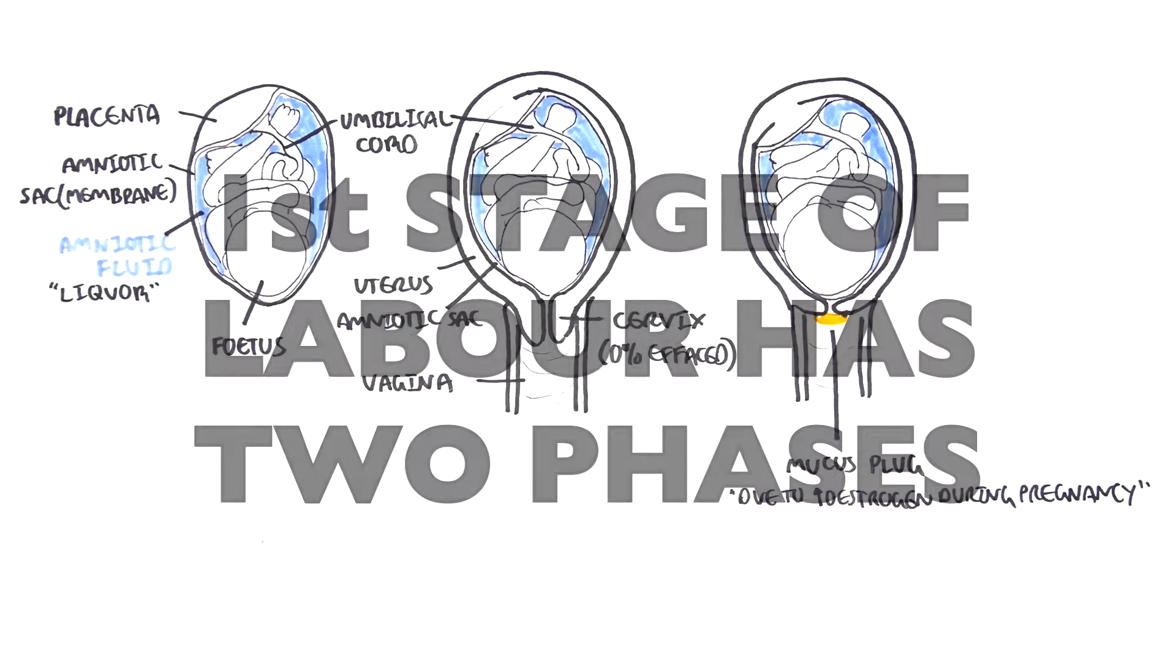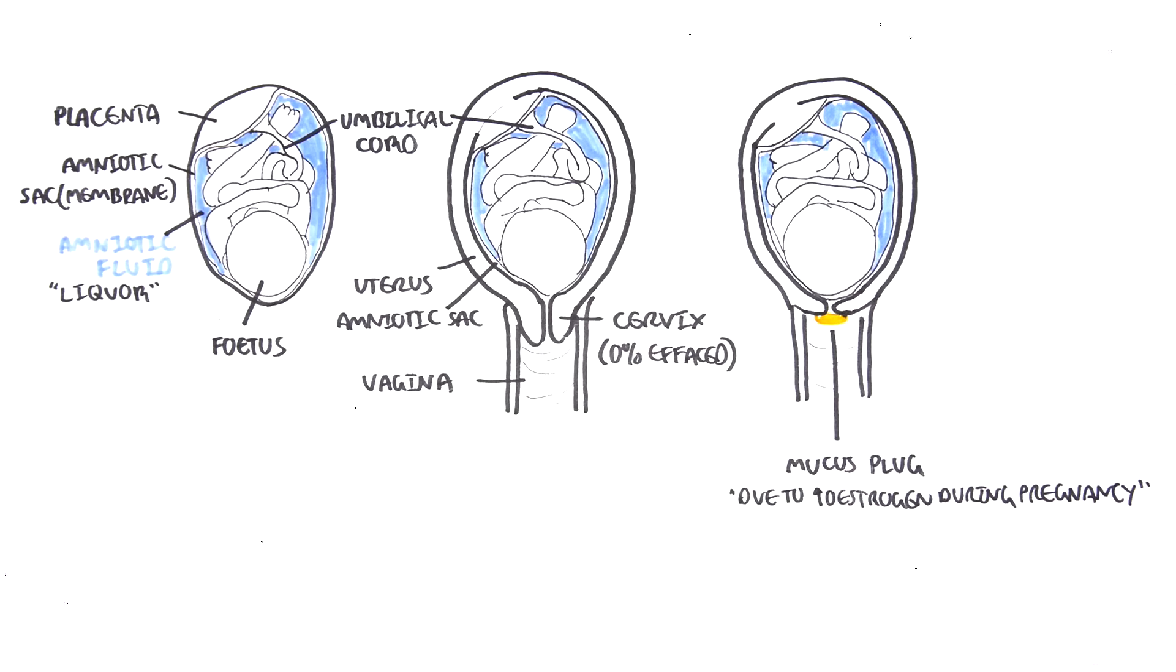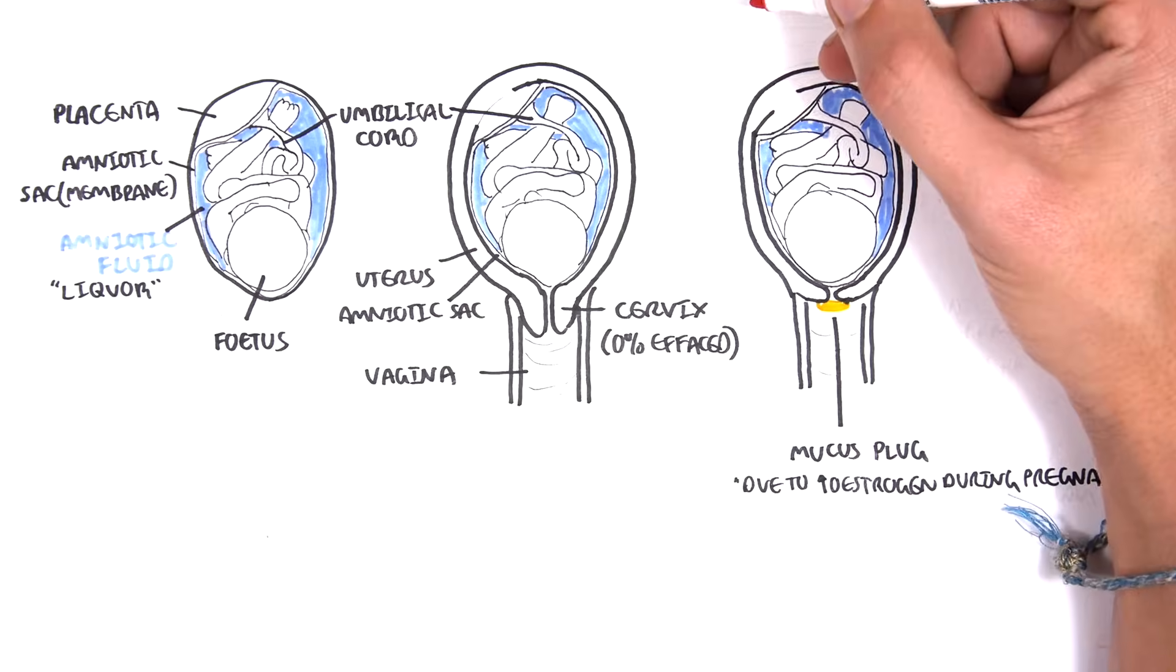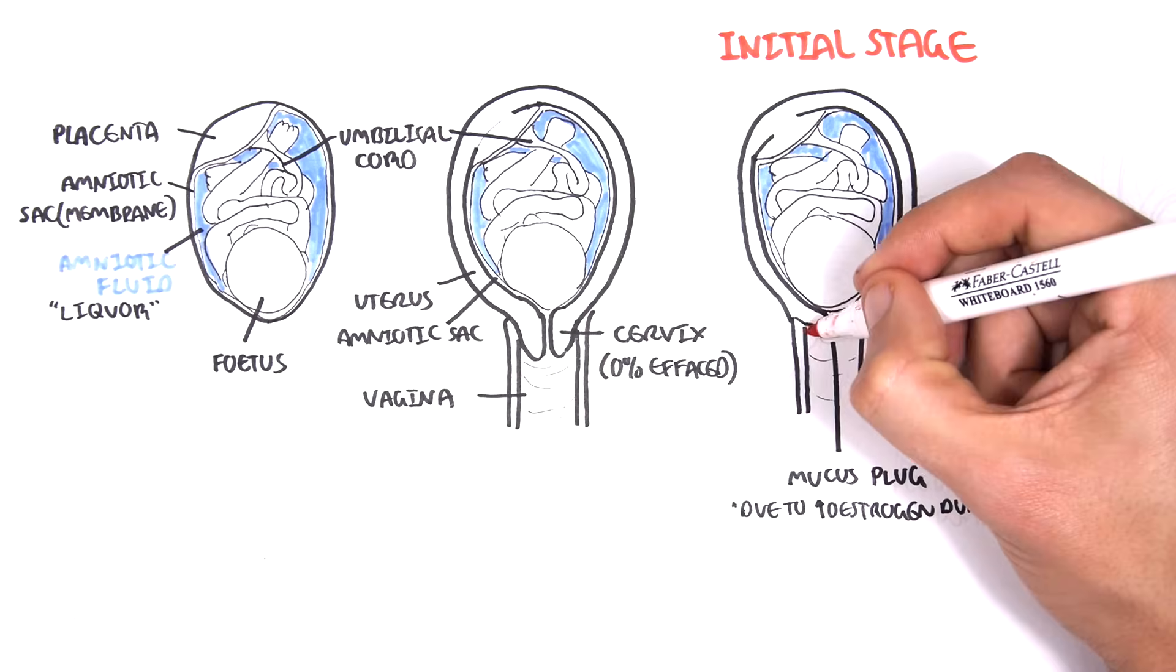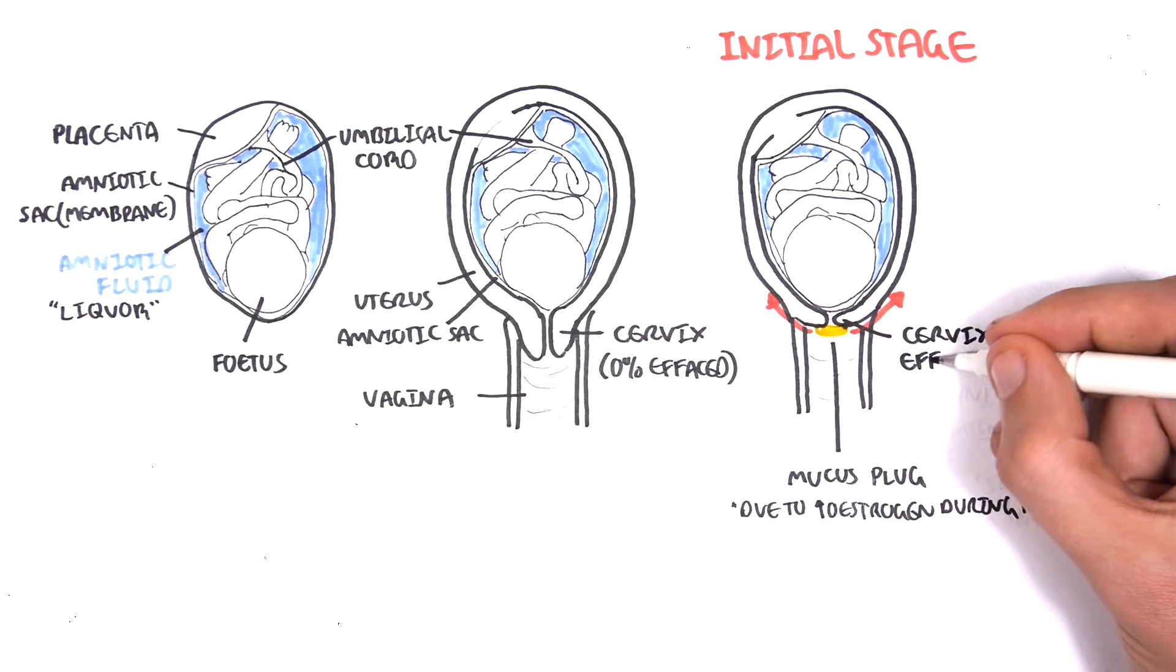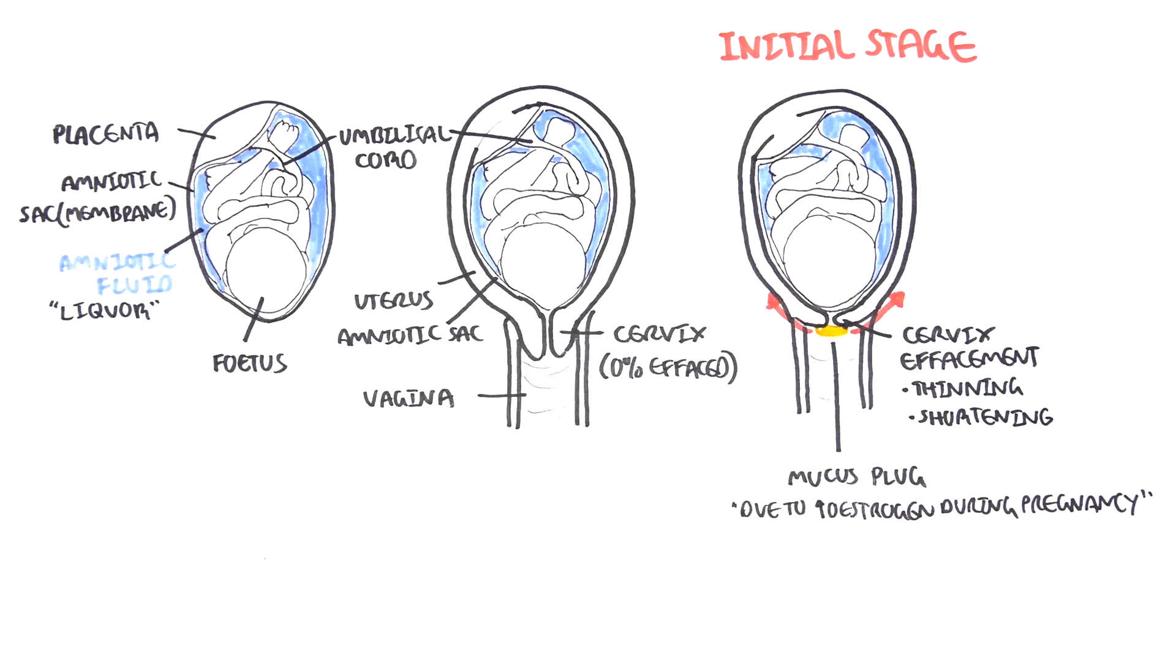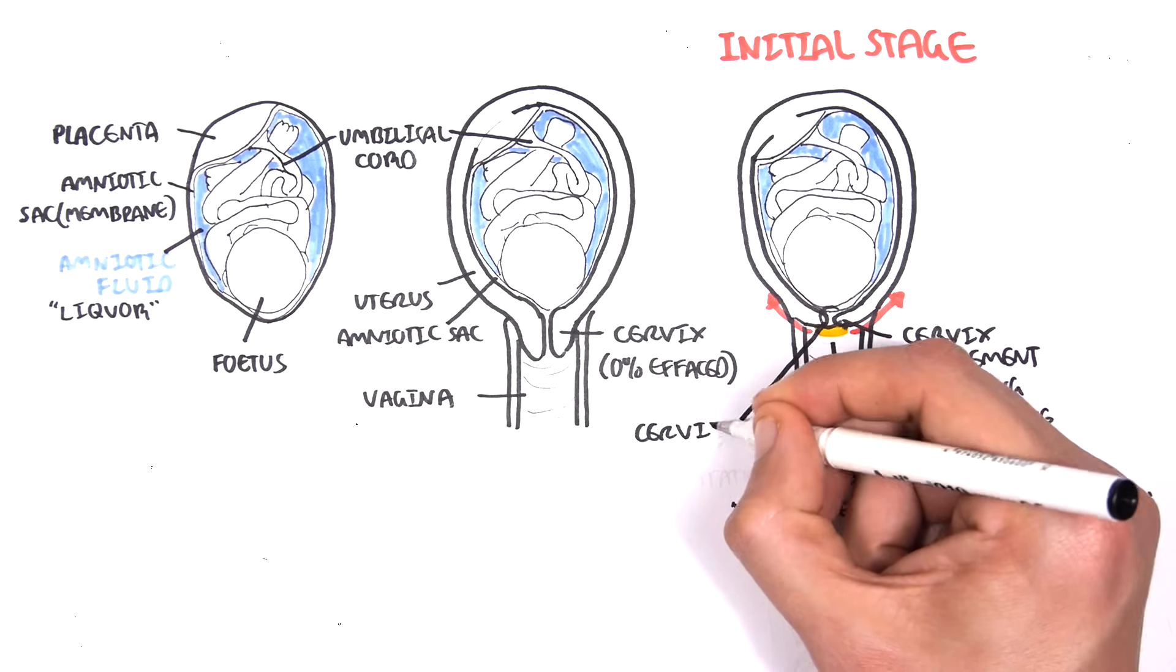Stage 1 of labor is actually divided into two phases. The initial phase also known as the latent phase, and then there is the active phase. Here in this drawing you can see the cervix has thinned out. The cervix effacement is where there is thinning and shortening. And then following effacement you can also get cervix dilatation.